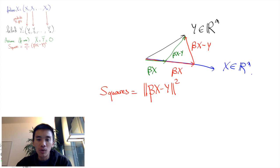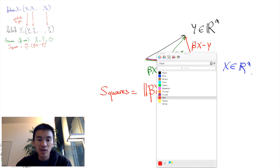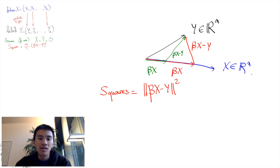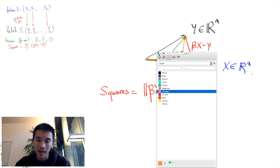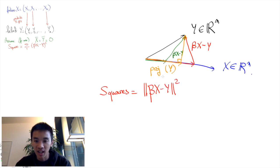But this is a well-known problem in Euclidean geometry. The solution is the vector beta*X that is the orthogonal projection of Y onto the one-dimensional vector space spanned by the vector X.